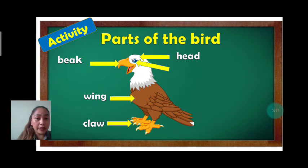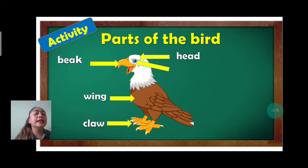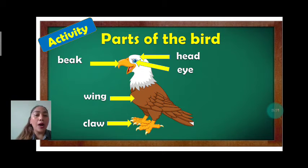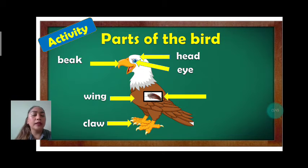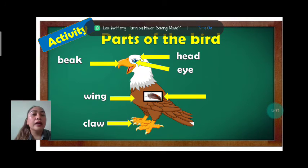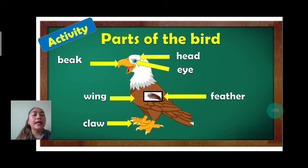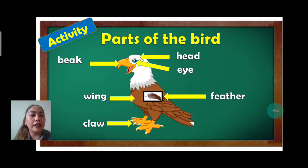How about this one? I know everybody knows this one. What part of the bird is it? Very good. Eye. Let's spell: E-Y-E. How about this one? What part of the bird is it? Everybody, repeat after me: feather. Let's spell: F-E-A-T-H-E-R. Feather. Great job.